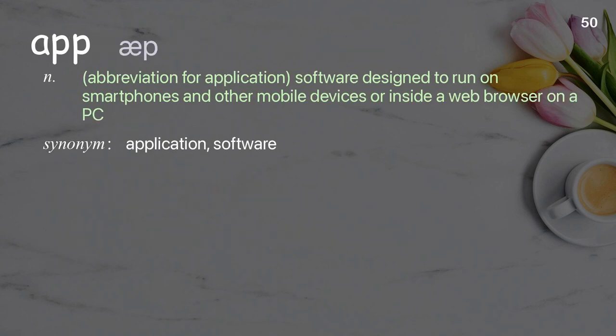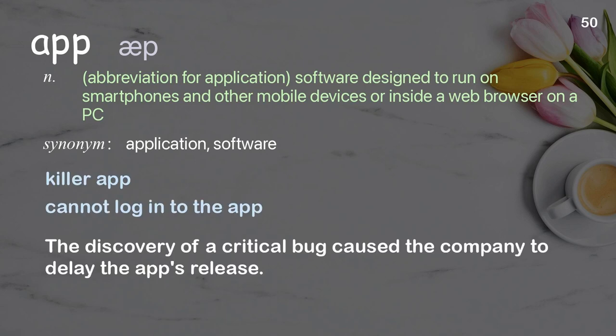App. Abbreviation for application. Software designed to run on smartphones and other mobile devices or inside a web browser on a PC. Examples: killer app, cannot log into the app. The discovery of a critical bug caused the company to delay the app's release.